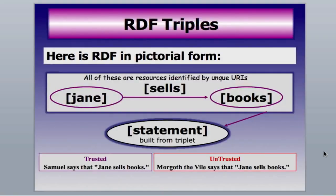Here's how the RDF triplet looks in pictorial form. You can see that our resources — Jane and books — are tied in with the verb 'sells,' and that makes a statement. Remember that at the very top of our layers is the trust. If we have the statement 'Jane sells books' from a person we know very well named Sam, we're going to trust that a lot more than if somebody named Morgoth the Vile, whom we don't know, says 'Jane sells books.' So there's a trust factor in there, and we're going to have to find a way for computers to know that they can trust the sources.